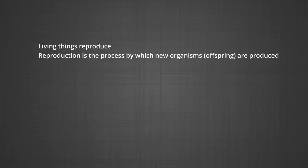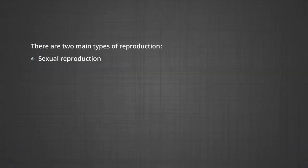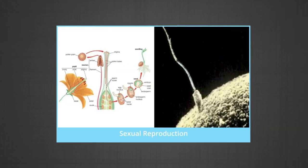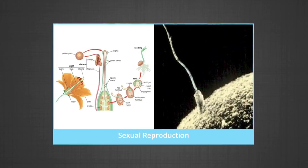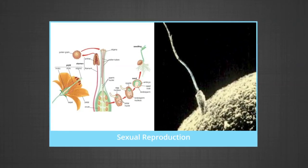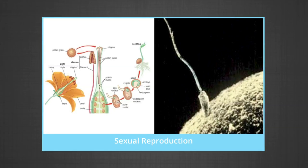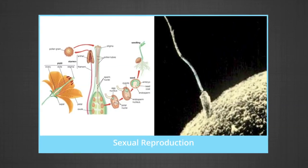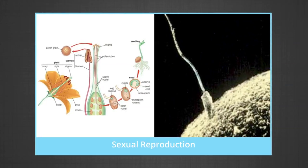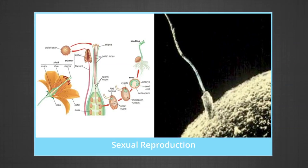Living things reproduce. Reproduction is the process by which new organisms are produced. A living organism does not need reproduction to survive, but as a species, they need it for continuity and to ensure that they are not getting extinct. There are two main types of reproduction: sexual reproduction and asexual reproduction. Sexual reproduction involves two individuals of the same species, usually a male and a female. The male and female sex cells or gametes come together for fertilization to take place. After this, the newly fertilized cell goes on to become a new organism, the offspring. This form of reproduction is seen in multicellular organisms.